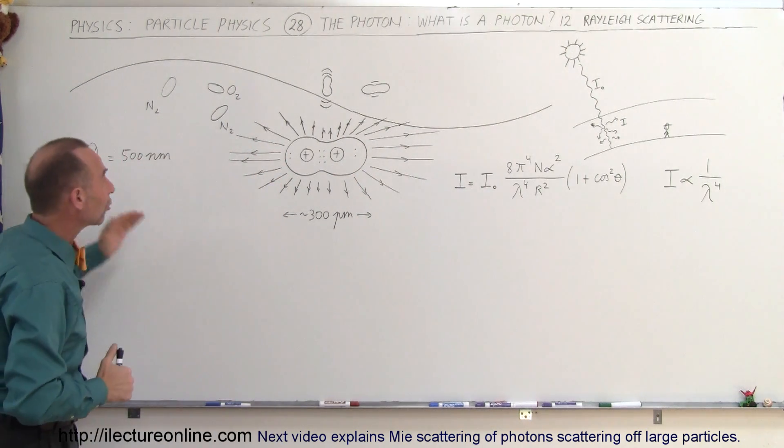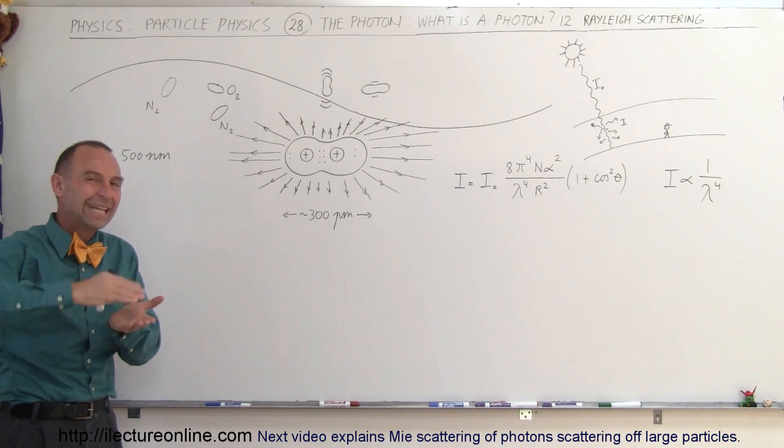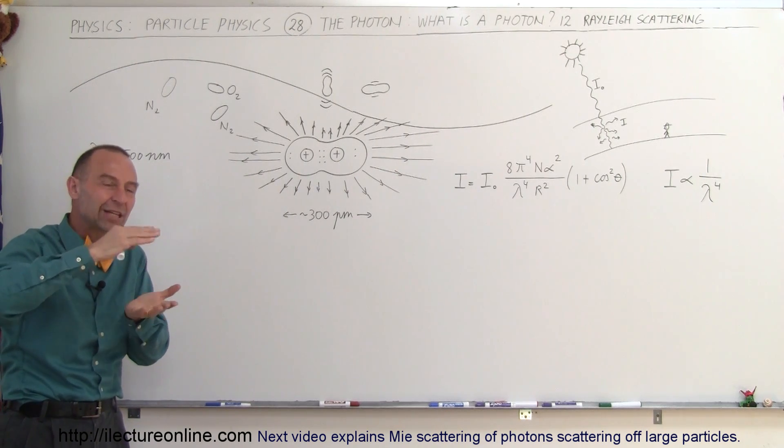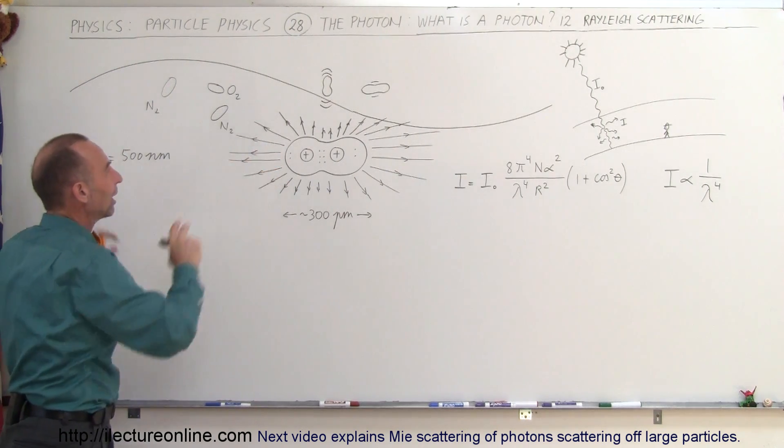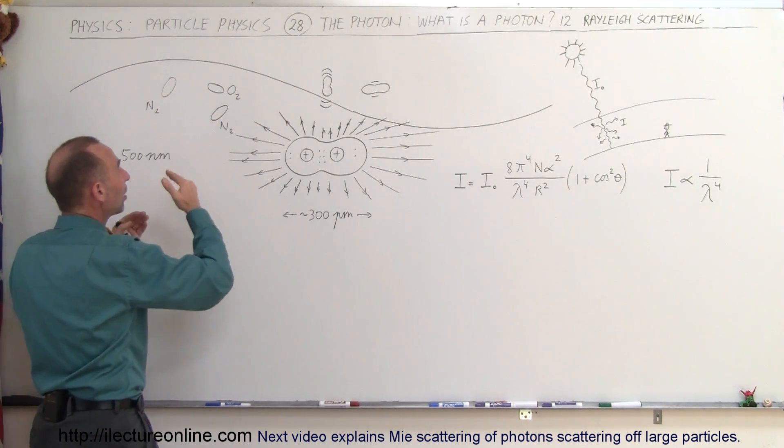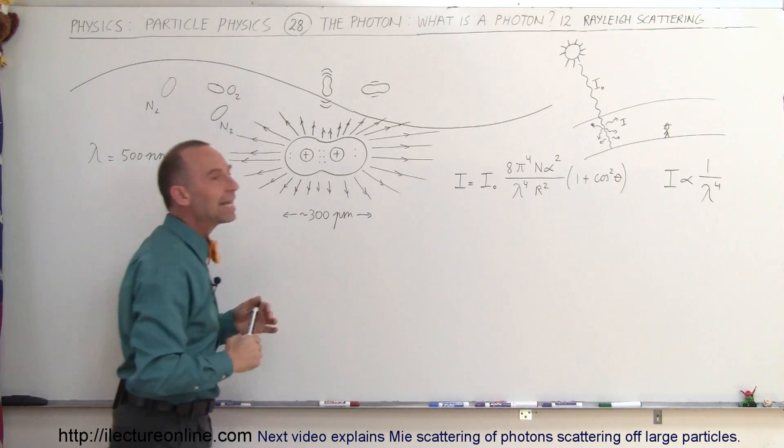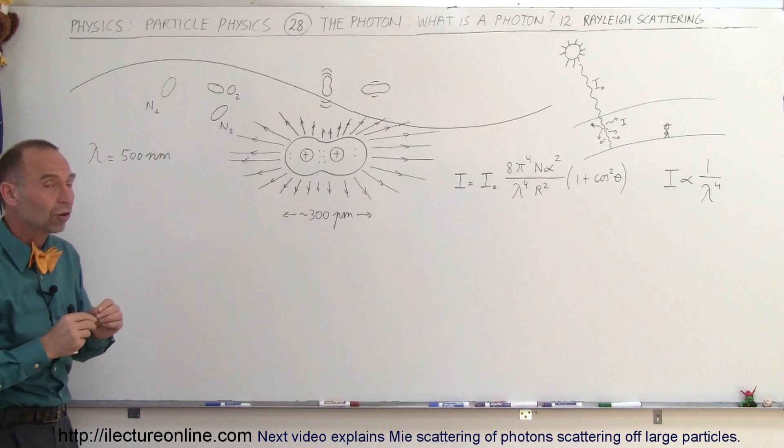And so when an electromagnetic wave or a photon comes along, and of course a photon, what does it do? It changes the electromagnetic field around these air particles, the air molecules for example. And it causes them to vibrate at the same frequency as the vibration of the electromagnetic radiation or the vibration of the photons.